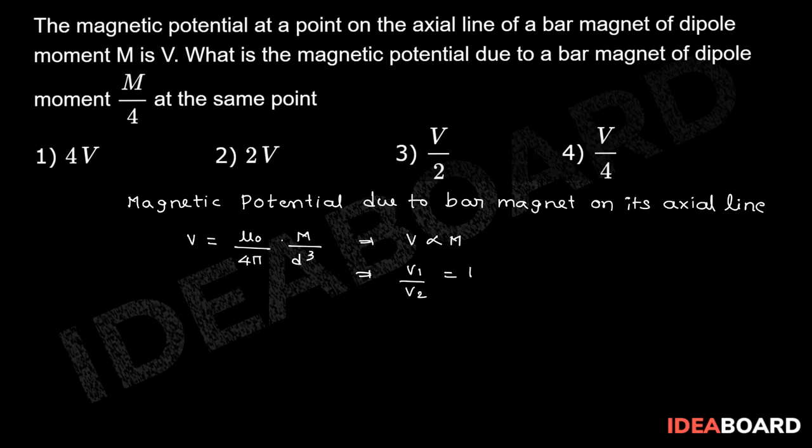Let us take V1 by V2 is equal to m1 by m2. This is V by V2, which is equal to m by m by 4. Cancel it out.